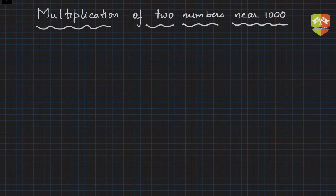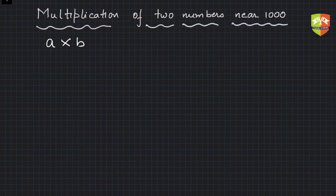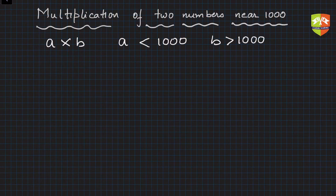Welcome back! Let's complete this process of multiplication of two numbers near thousand. In the previous sessions we have seen two numbers lesser than thousand, then two numbers more than thousand, and we tried finding an easier technique of multiplying those two numbers. Now in this case, we have two numbers where a is less than thousand and b is greater than thousand — both are closer to thousand, but one is less and one is greater. Let's see how to work with those kinds of numbers.